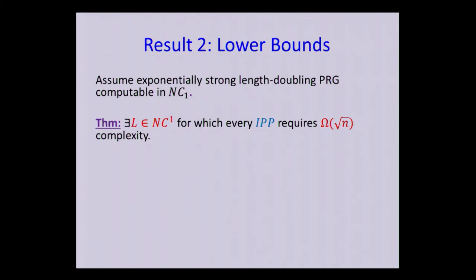And if you're worried about this exponentially strong, if you're only willing to assume less, say, sub-exponential, this only deteriorates our lower bound, but the lower bound will still hold with the parameters will be slightly worse. Assuming this assumption, we show a language in NC1, so very low-complexity class, for which every interactive proof of proximity requires square root of n complexity, say, verifier running time.